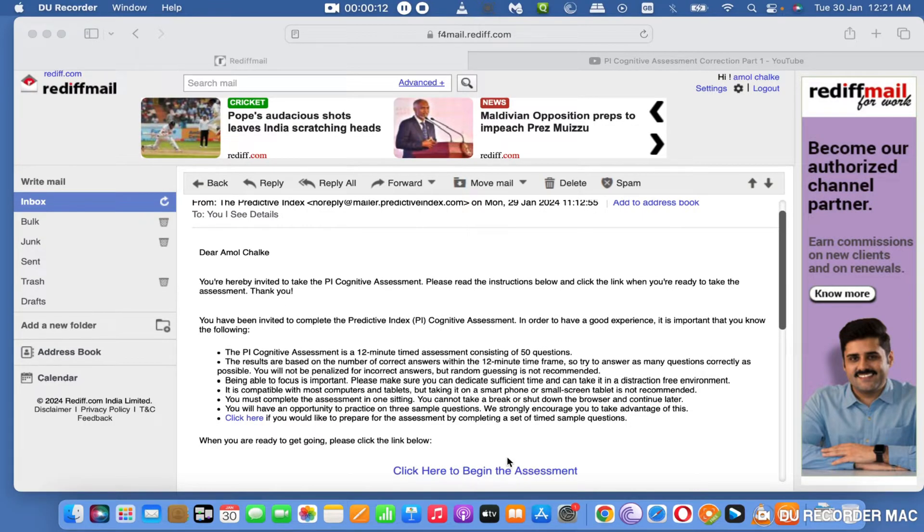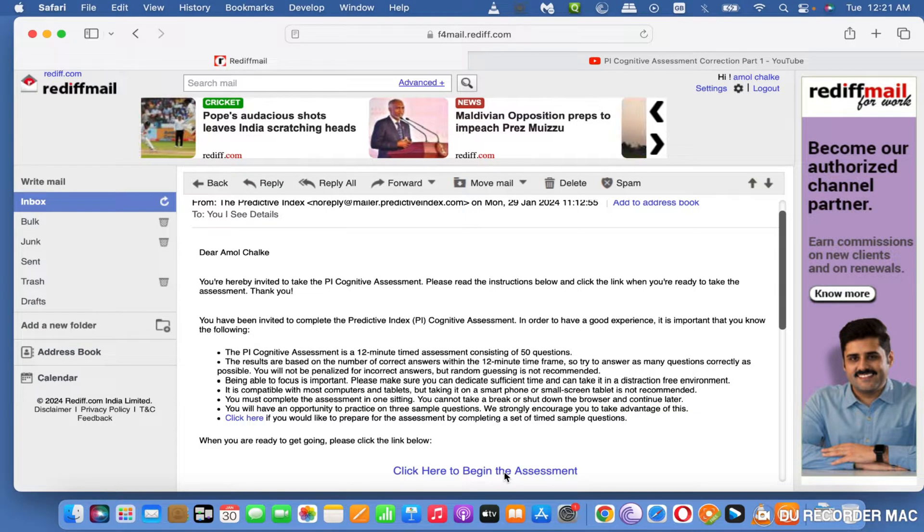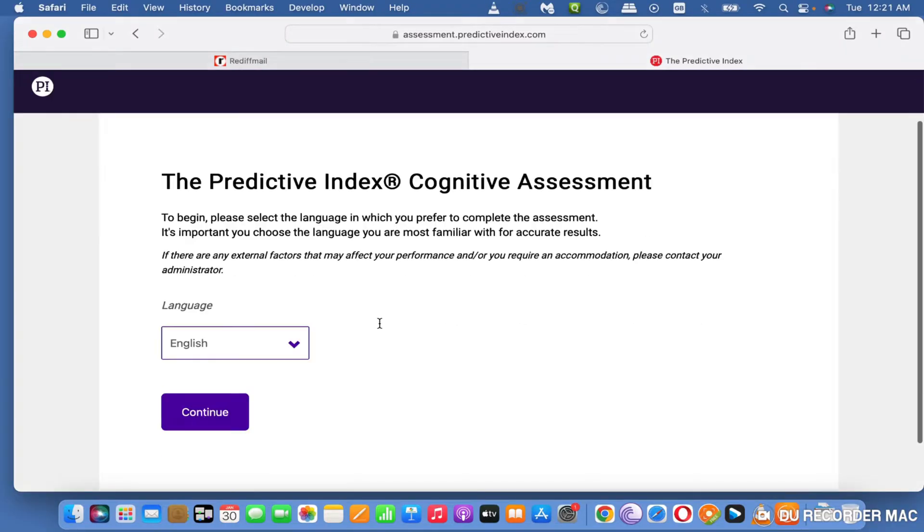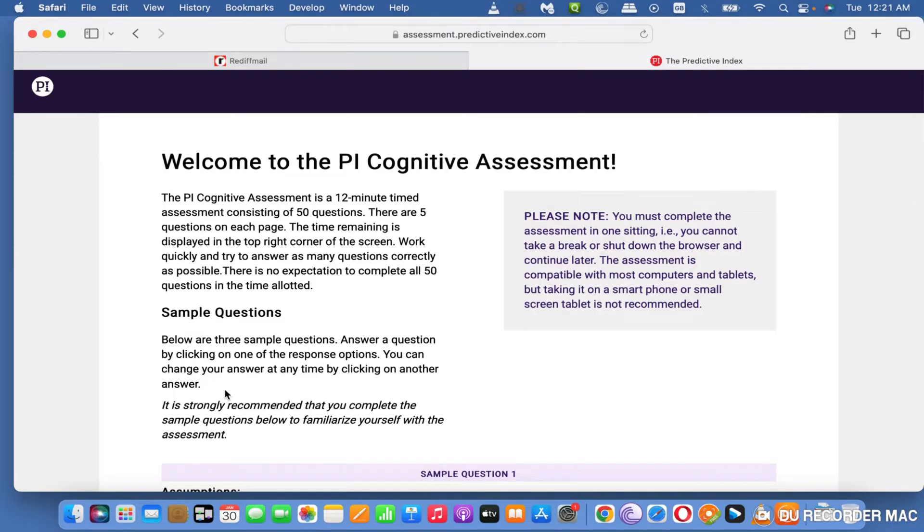Hello friends, welcome to my channel. This is Captain Pope, a sailor. Today we'll be taking the PI cognitive test. I'm applying for a job in a new company, and this test has been forwarded to me through email. Let's get into the business. As you know, this is a 12-minute, 50-question test.